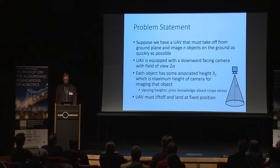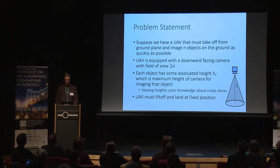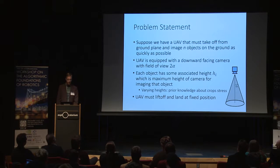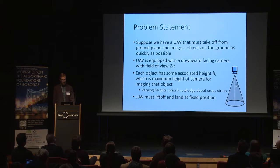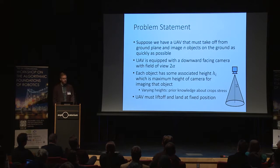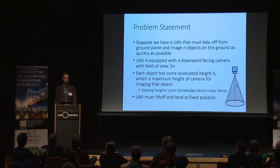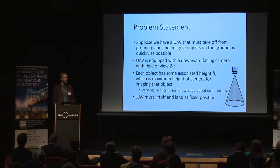Motivated by row crop inspection, we formulate the following problem. Suppose we have a UAV which must take off from the ground plane and image N objects on the ground as quickly as possible. The UAV is equipped with a downward-facing camera with field of view angle alpha, so alpha is the maximum offset, and each object has some associated height, which is the maximum height of the camera for imaging that object. You can think of this as prior knowledge about a field — some parts where we want higher resolution data, and some parts we're less interested in and it's okay to view from higher up.